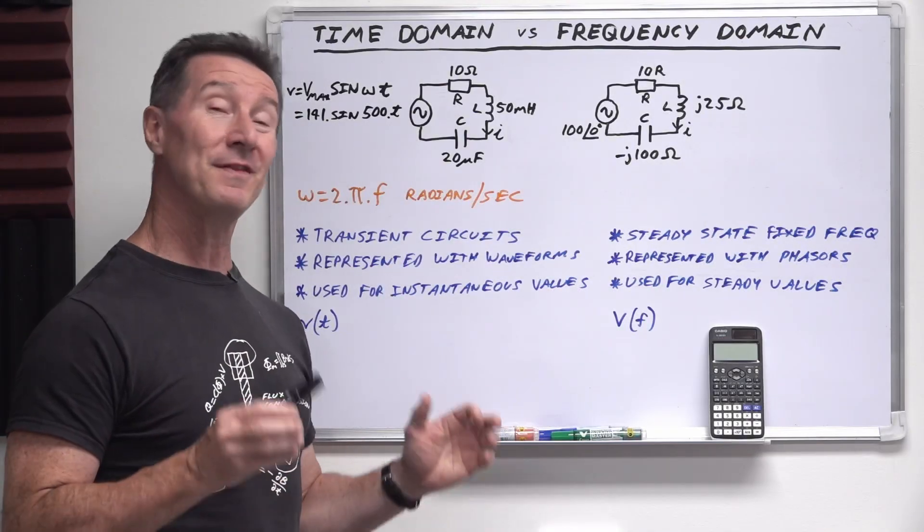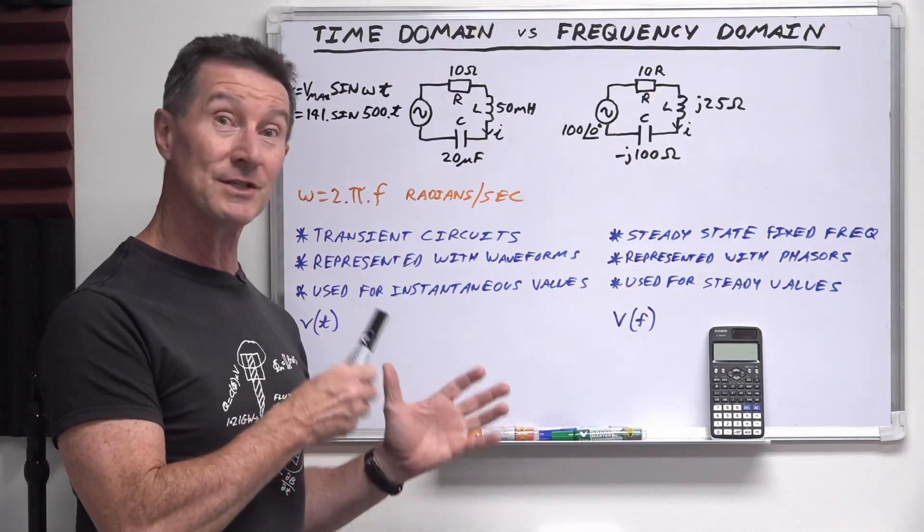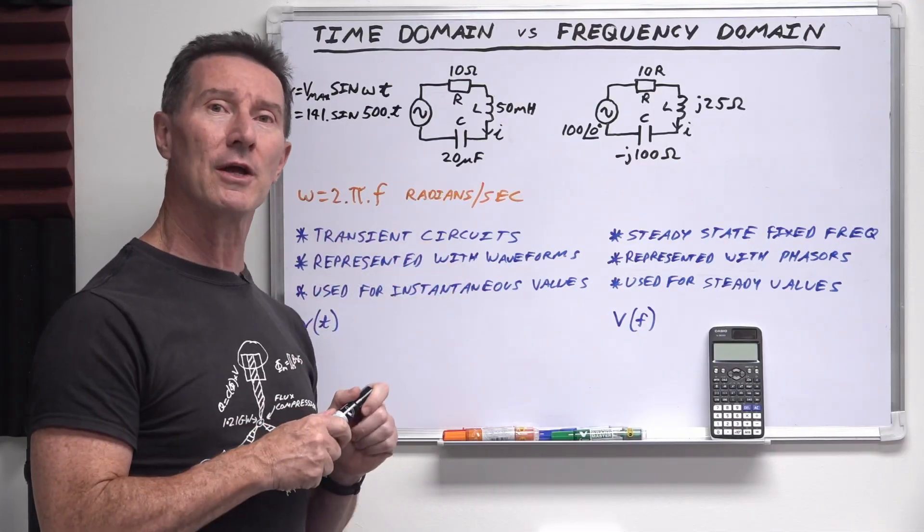Hi, this is part 5 in the AC Basics tutorial series. Last time we took a look at resistors, inductors and capacitors alone in circuit.